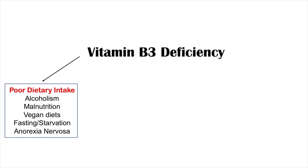Malnutrition leads to deficiency for the same reason. A vegan diet can also be a cause — although fortified grains, cereals, and legumes contain some niacin, a lot of vitamin B3 comes from meats and fish. Fasting, starvation, and anorexia nervosa can also lead to deficiency for similar reasons.